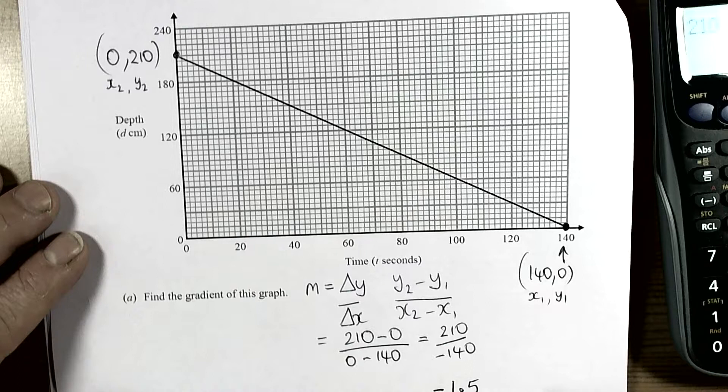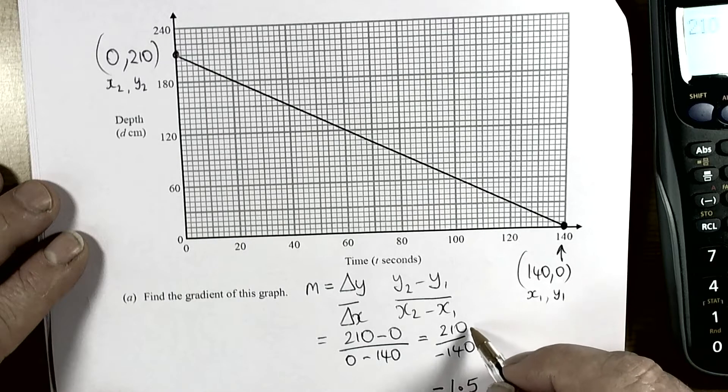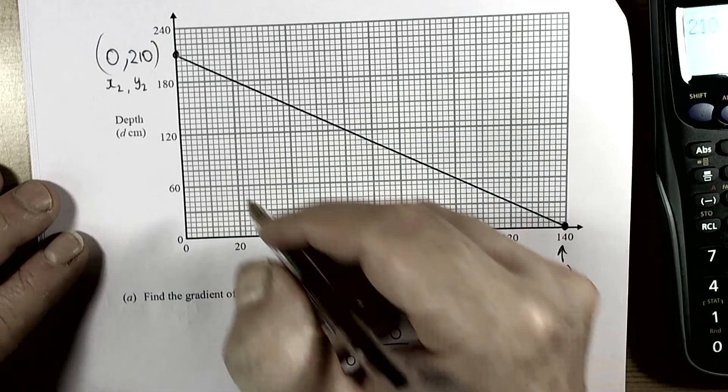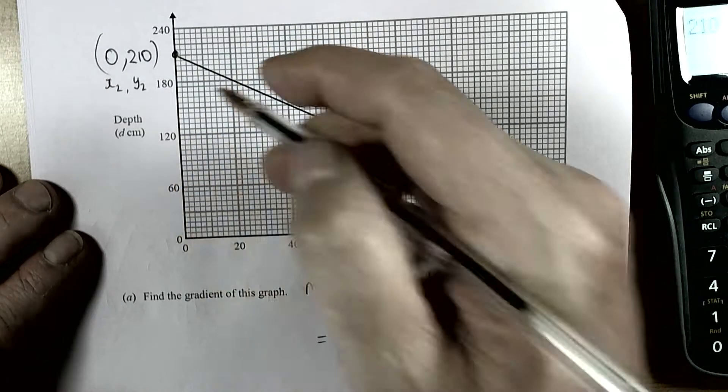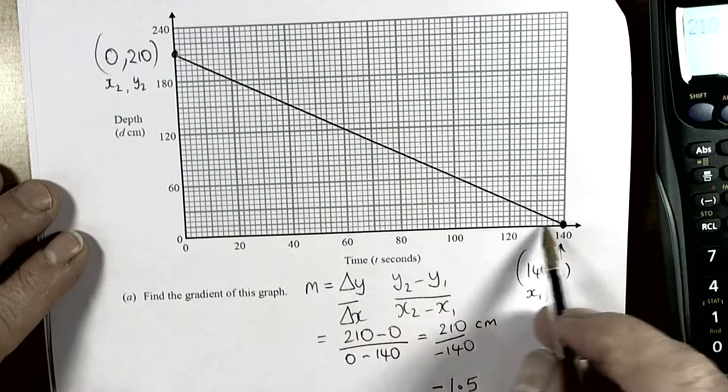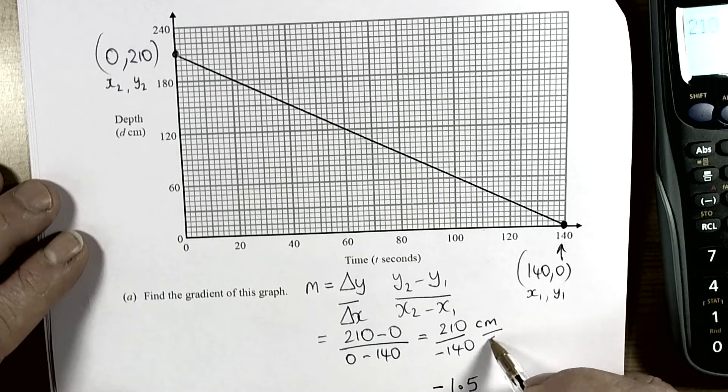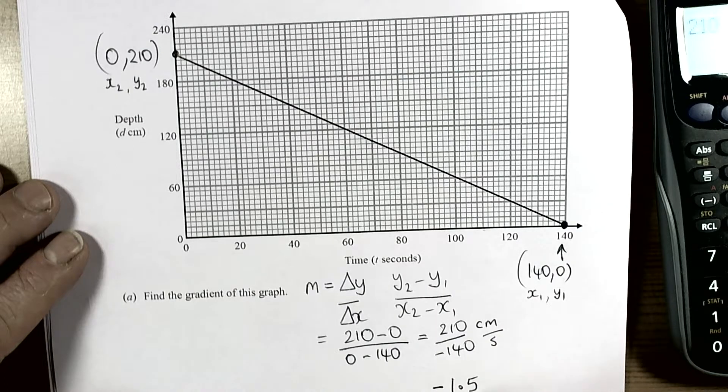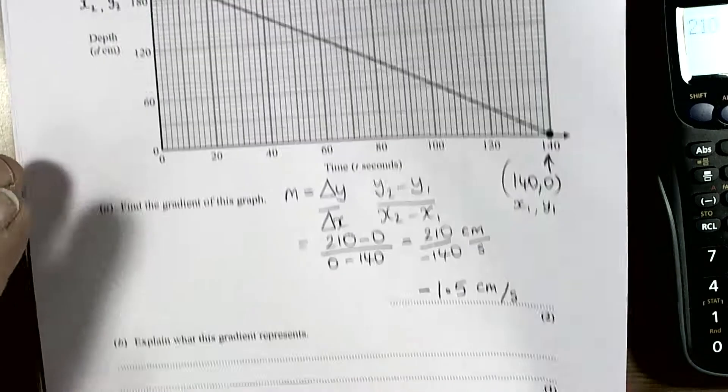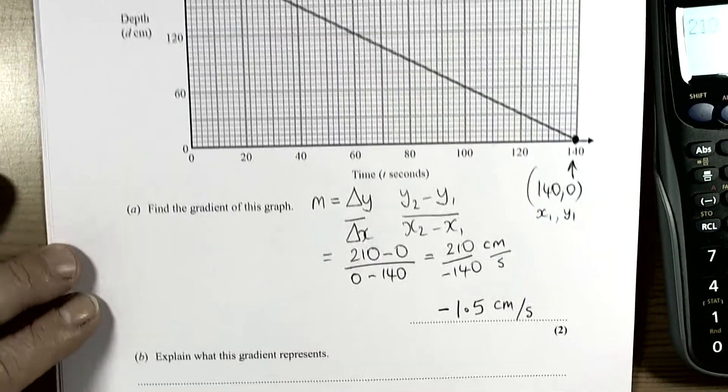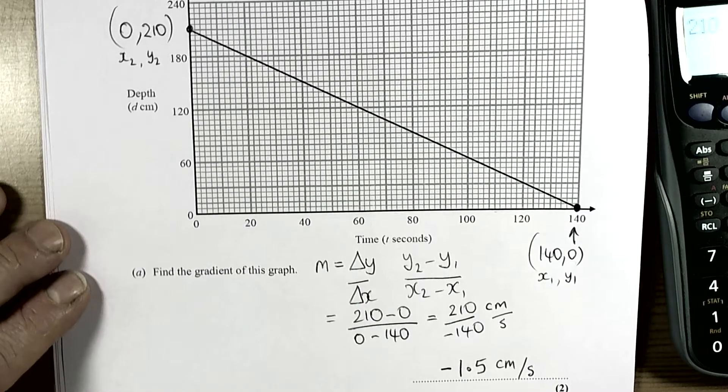No units given so it's useful to think what this means. Well the 210 represented the centimetres. The 140 was representing seconds. So the units of this would be negative 1.5 centimetres per second. Okay so that's how we'd find the gradient of that line.